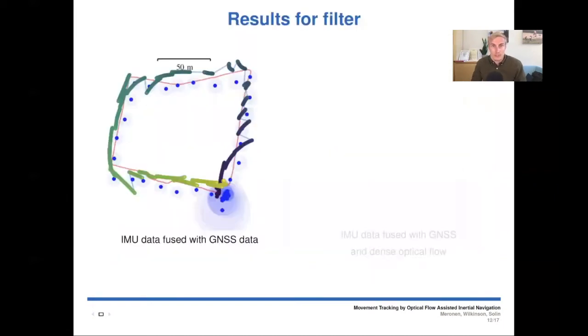Then for the results, in the results, the blue circles are the GNSS location measurements. And they have the uncertainty as the shaded circle around them. And then the red track is the ARKit path. And then the colorful path is our result track. Here on the left first, we have the result using IMU data fused with GNSS data. And there is some considerable gaps each time a GNSS measurement is observed.